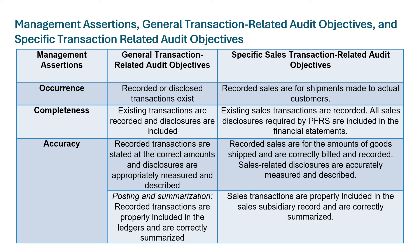For the management assertion of completeness, the general audit objective would be: existing transactions are recorded and disclosures are included — no mention of what transaction. You can use this for just about any client and any transaction. But the specific transaction-related audit objective for completeness in sales would be: existing sales transactions are recorded, and all sales disclosures required by PFRS are included in the financial statements.